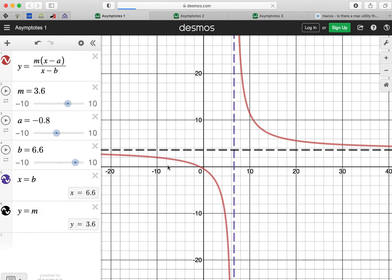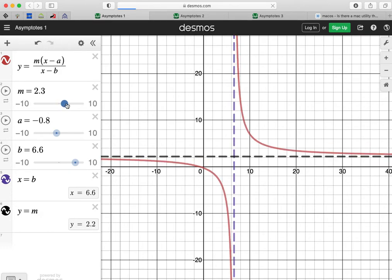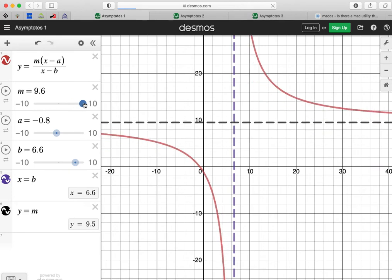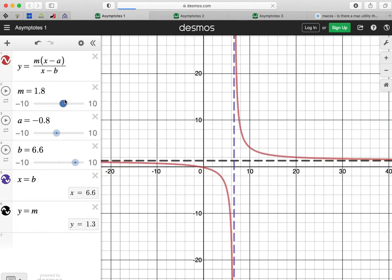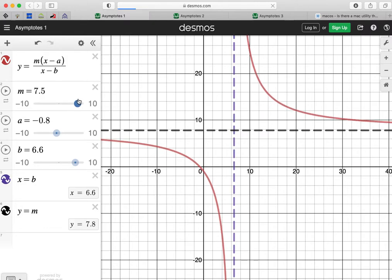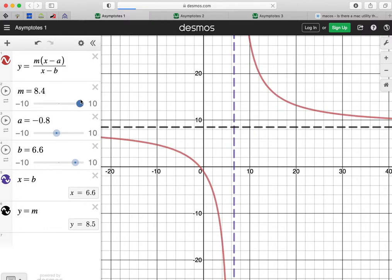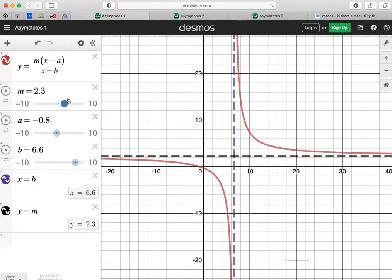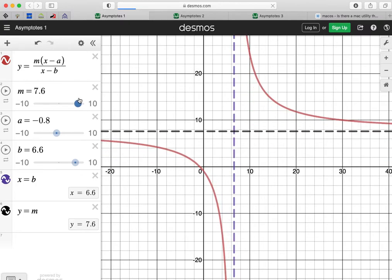Well, in this particular case, let's have a look and see. It looks like the multiplier does. And that kind of makes sense a little bit from our understanding of graphs, that it multiplies certain coordinates. So the multiplier does change the horizontal asymptote in this case.